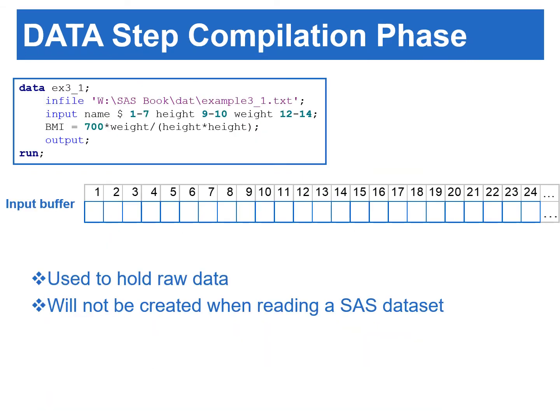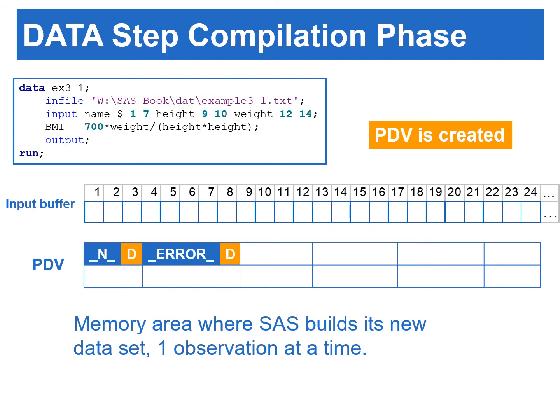The data step starts with the compilation phase. Since we are reading a raw data file, the input buffer is created at the beginning of the compilation phase. The input buffer is used to hold raw data. However, if you read in a SAS data set, the input buffer will not be created. SAS also creates the Program Data Vector, or PDV, in the compilation phase. PDV is a memory area on your computer, and SAS uses PDV to build the new data set one observation at a time.